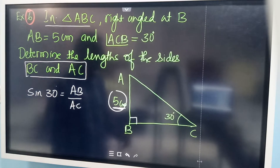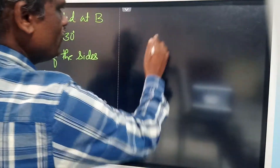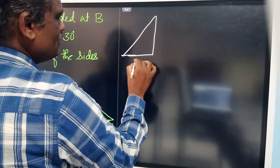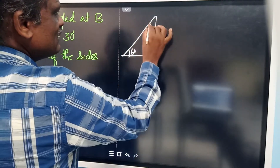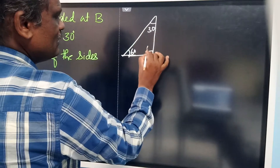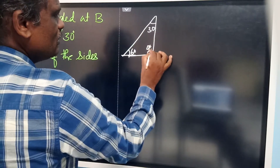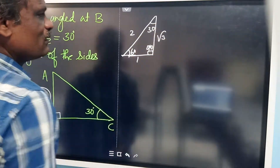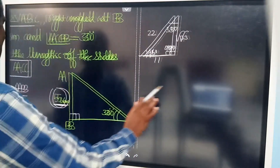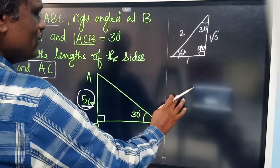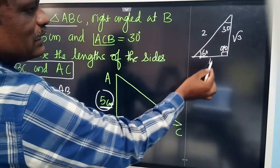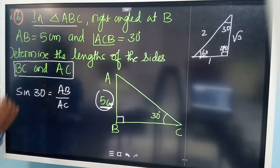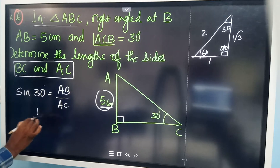To recall the ratios, remember the 30-60-90 triangle with sides 1, 2, and root 3. Sine 30 means opposite side by hypotenuse. Looking at the diagram, sine 30 equals 1 by 2.